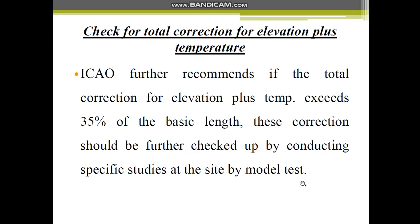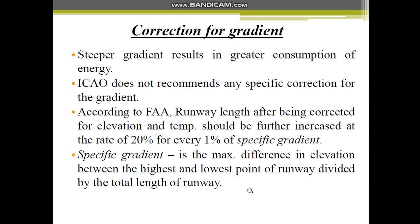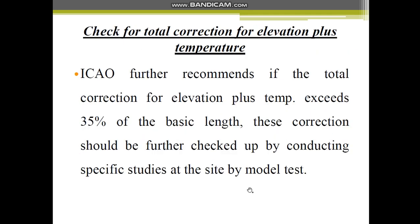For example, whatever the basic runway length is given — say 10 units — due to elevation it has been increased to 12 units, and due to temperature it has increased to 16 units, so the total increase is 8 units. The basic runway length was 10 units, so that increase should be less than 35% of the basic length. If it is more than 35%, it has to be further checked by conducting specific studies at the site. This check is also to be performed when doing numericals.